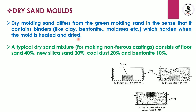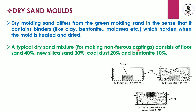For making dry sand molds, the sand mixture used for non-ferrous castings consists of floor sands around 40 percent, new silica sands around 30 percent, coal dust around 20 percent, and bentonite as a binder around 10 percent.